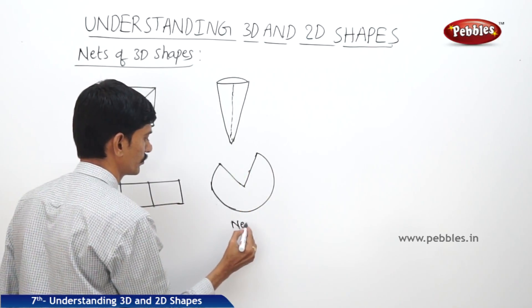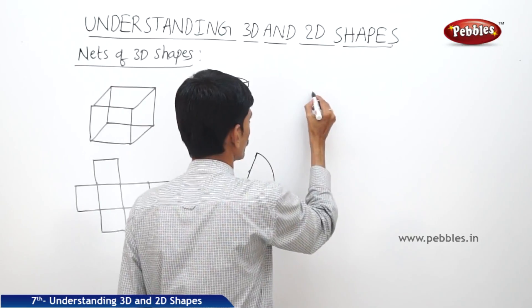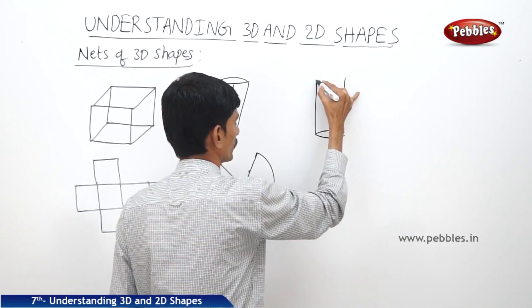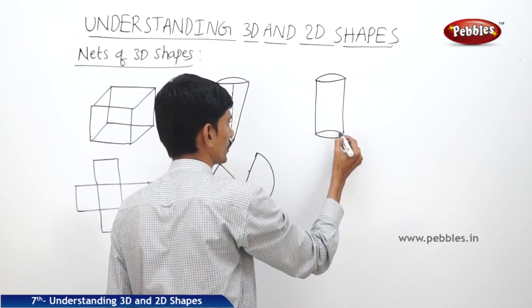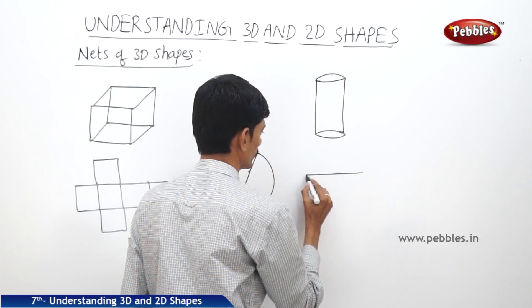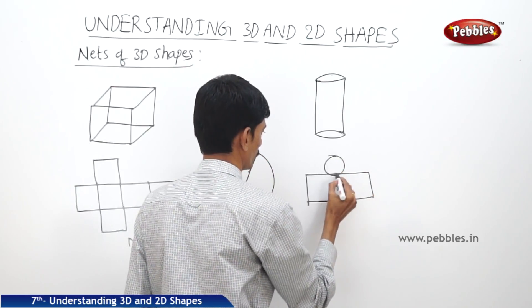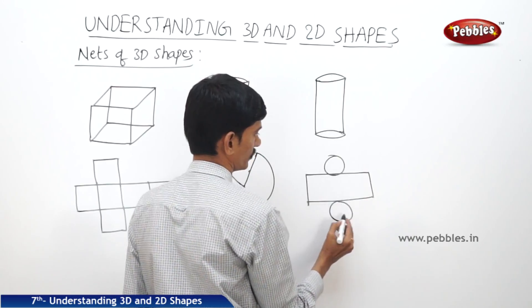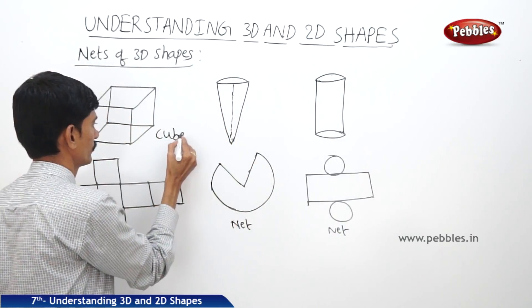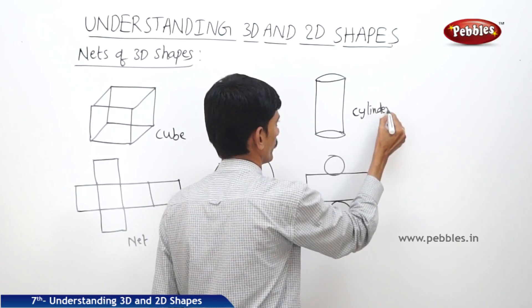Now for the cylinder — it has one curved face and the other two are circular bases. When unfolded, we get its net. So this is the net of the cylinder, along with the nets of the cube and cone.